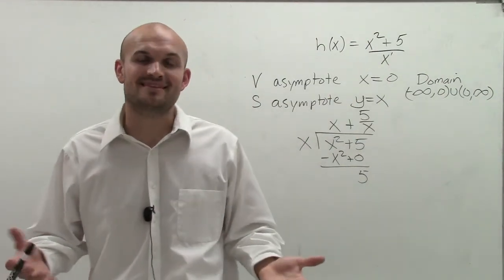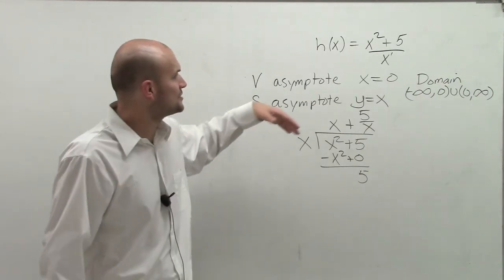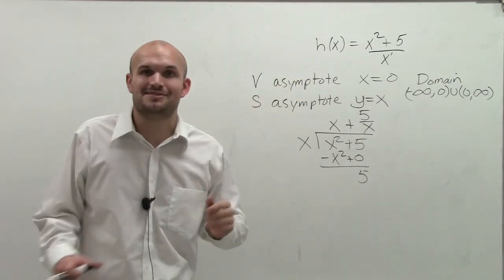So there you go, ladies and gentlemen. That's a quick little description of how to determine the vertical and slant asymptote. Thanks.